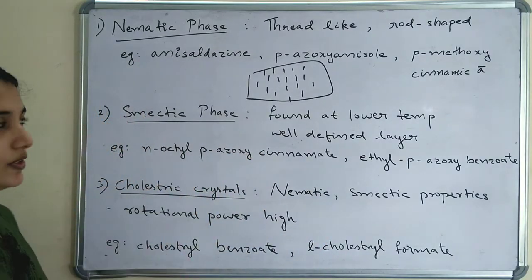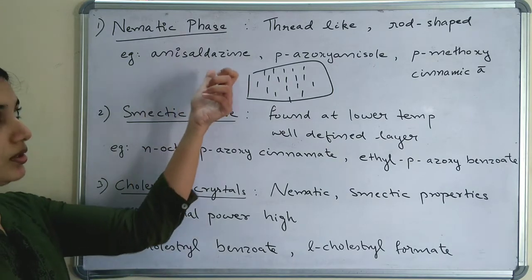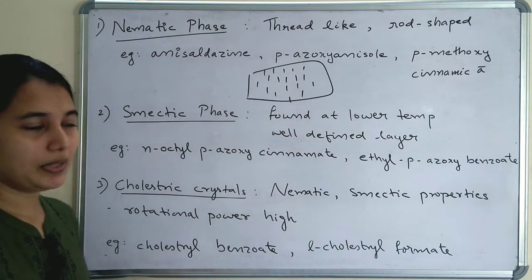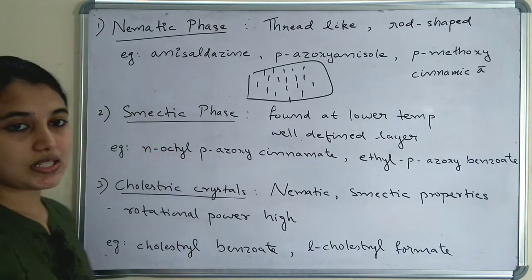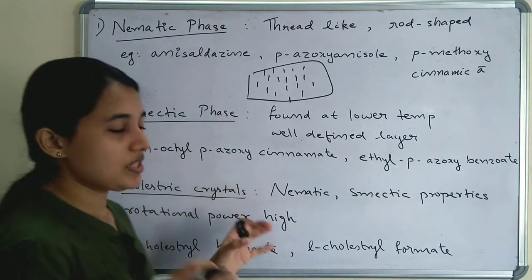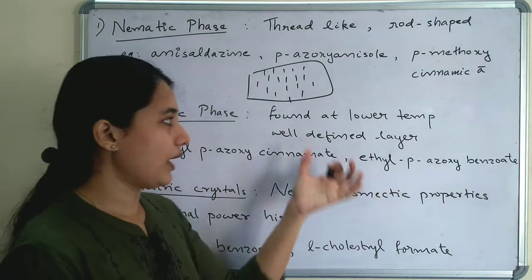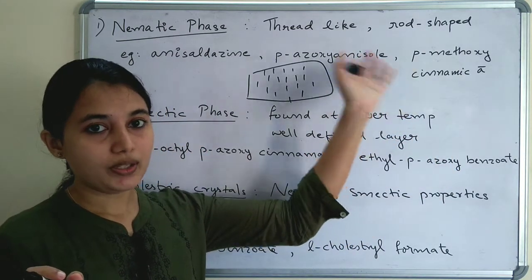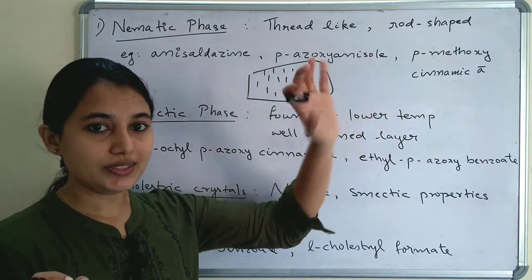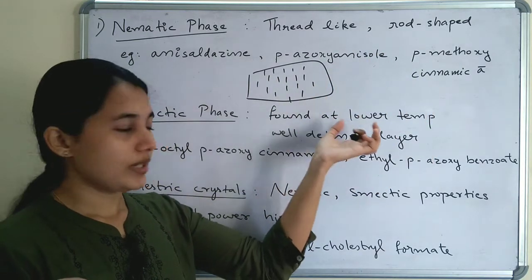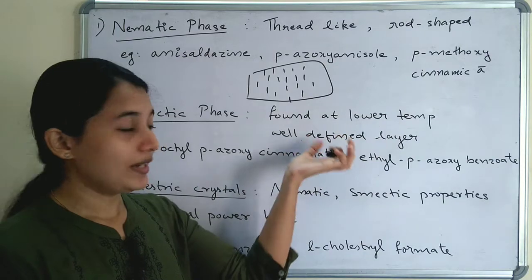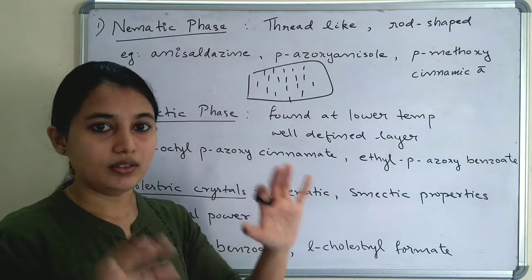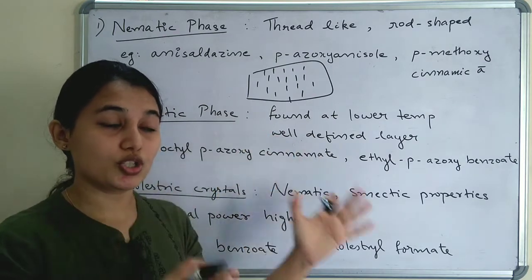In nematic phase liquid crystals, they are found at lower temperatures. These are thermotropic liquid crystals — they depend upon temperature. In nematic phase there is no well-defined layer, meaning no positional order.